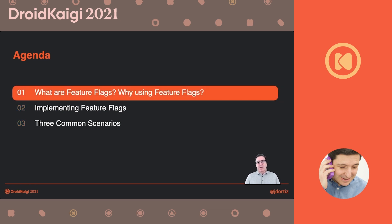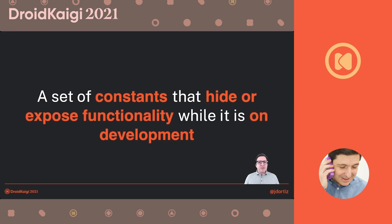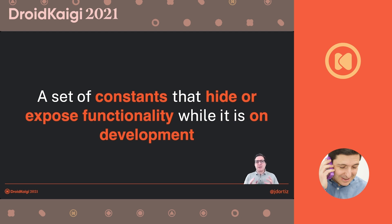Let's start with what feature flags are and how they are relevant to you. Feature flags are a set of constants that will enable or disable functionality while you are developing it. That is very useful because you can have things that are not fully developed and still belong to the main code that you share among all your team, or at least that doesn't bother you if you are an independent developer.